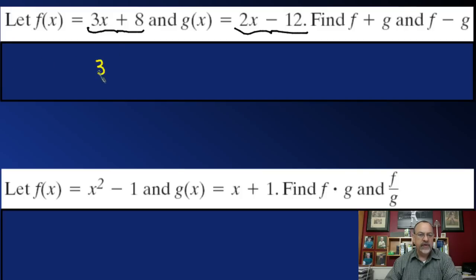We would take the 3x plus 8 and add that to the 2x minus 12. Adding is pretty easy. We just add like terms. We have 3x and 2x, which is 5x, and then the negative 12 plus the 8 would be negative 4. So this would be f plus g of x.